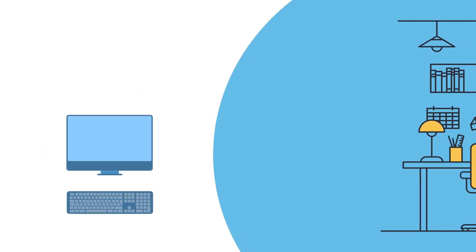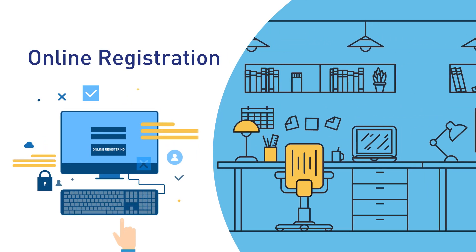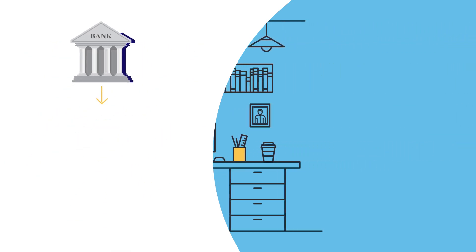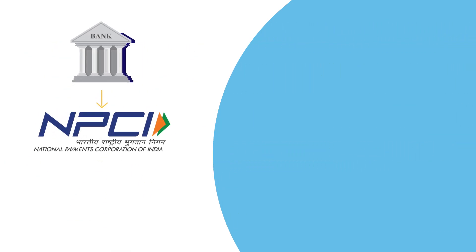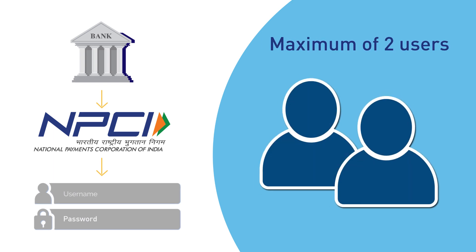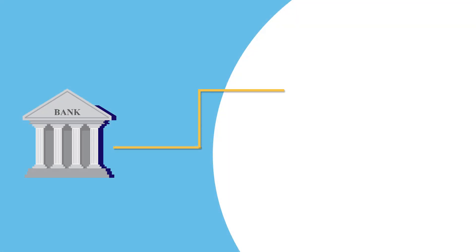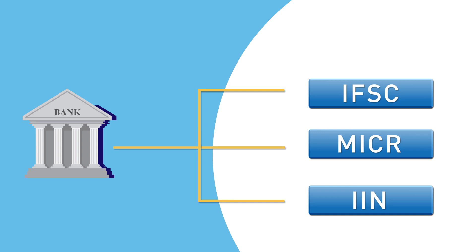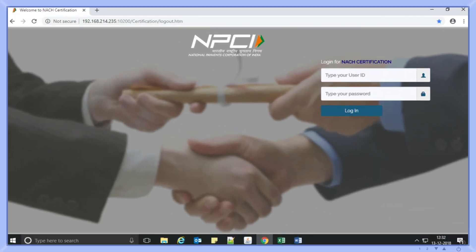Once that's done, the bank can self-certify online from the convenience of your office itself. The bank should approach NPCI to get a username and password for using this application. A bank can take up to a maximum of two users. Banks should submit IFSC, MICR, and IIN for the purpose of creation of participant master in the application.